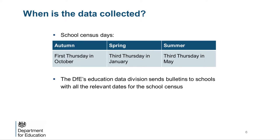School census data is collected three times a year. For each collection, the data you return should reflect the position in your school as at census day. This slide provides the timetable of each term's collection. The statutory return date, by which all schools must have made the submission, is always four weeks after the census day.